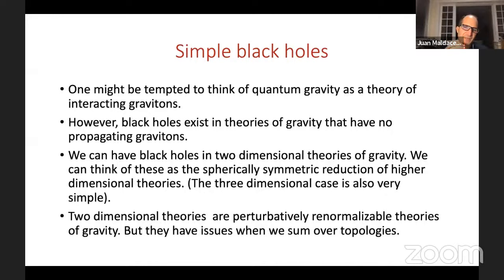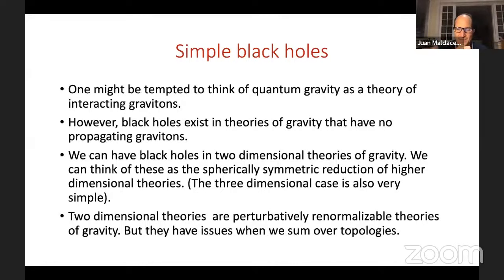In the quantum theory, a truly two-dimensional theory only considers two-dimensional quantum fluctuations, and two-dimensional theories are perturbatively renormalizable — nicer than four-dimensional gravity. They do have some issues when we sum over topologies, and we only know how to do that sum for special theories.